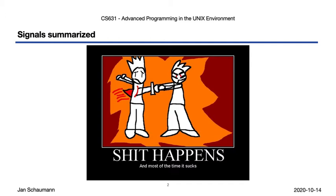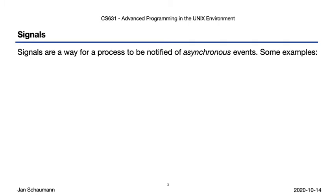Basically, signals are a way for the computer to tell your process that something happened, and most of the time that's not good news. In fact, more often than not, your process will be terminated as a result of receiving a signal. But not always. Signals are a way for a process to be notified of an event. The single most important aspect of signals is that they are asynchronous, and thus unpredictable. You don't know when they will occur, nor even that they will occur. They can occur at any time, or not at all.